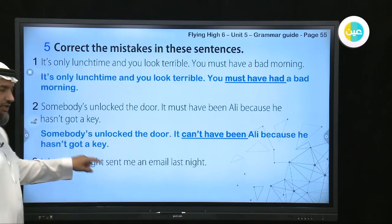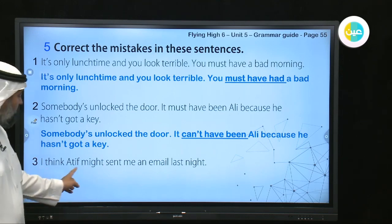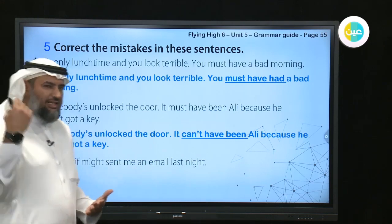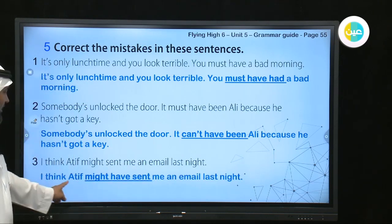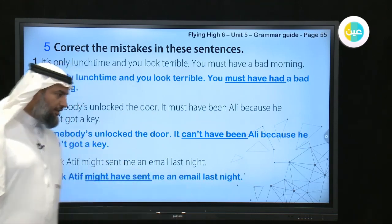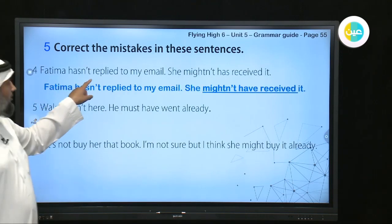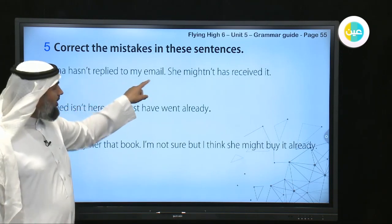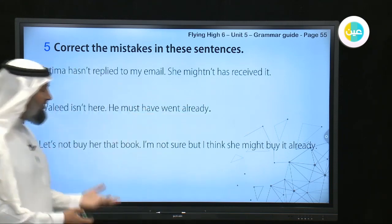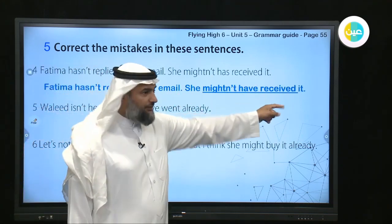Third sentence: 'I think Atif might send me an email last night.' The correction is: 'I think Atif might have SENT me an email last night.' Fourth: 'Fatima hasn't replied to my email — she mightn't has received it.' The correction is: 'She mightn't have RECEIVED it' — not 'has.'